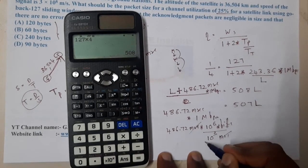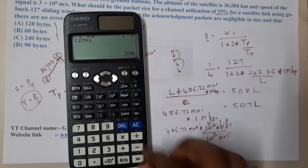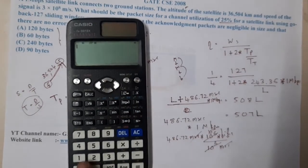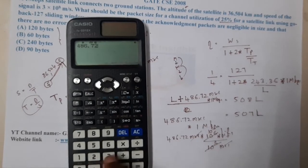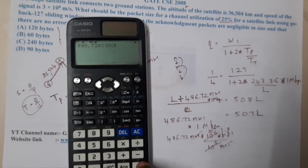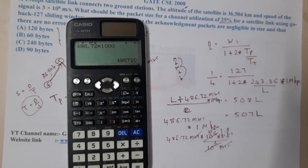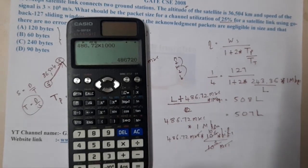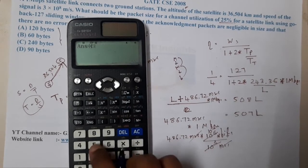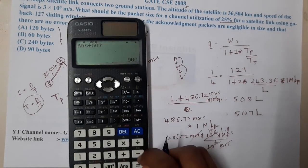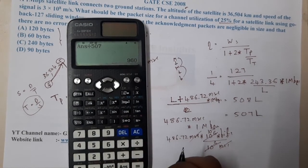If I send this part to the other side, it becomes 507L. After calculation, I get 960 as my result, so L equals 960 bits.